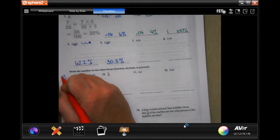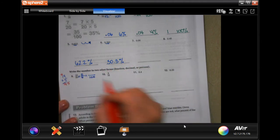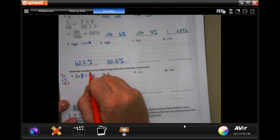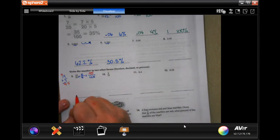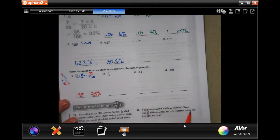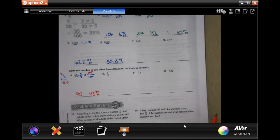Now, the bottom is 100, and 19 times 5, you can do a little side math over here. 5 times 9, 45. 5 times 1 is 5, plus 4 is 9. So, you're going to have 95 over 100. That means that you have 0.95, because the 5 ends in the 100th spot, or 95 percent.